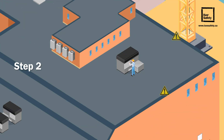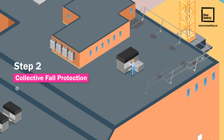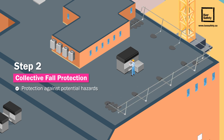Step 2: Collective fall protection. Guardrails, railings, and other physical barriers not only provide protection against potential hazards, but also grant workers the freedom of movement within the perimeter.